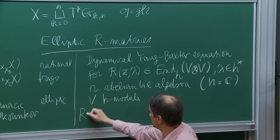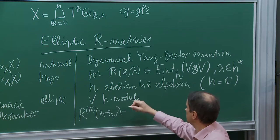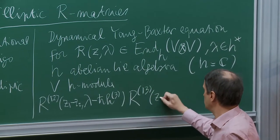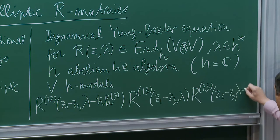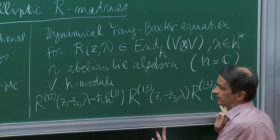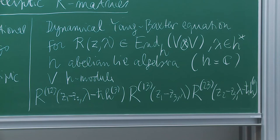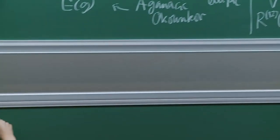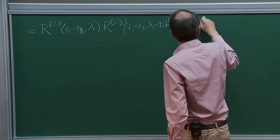The equation looks like this: R_{12}(z_1 - z_2, lambda - h-bar h_3) R_{13}(z_1 - z_3, ...) R_{23}(...) equals R_{23}(z_2 - z_3, ...) R_{13}(z_1 - z_3, lambda - h-bar h_2) R_{12}(z_1 - z_2, lambda). This is a little modification of the usual Yang-Baxter equation — a dynamical modification.